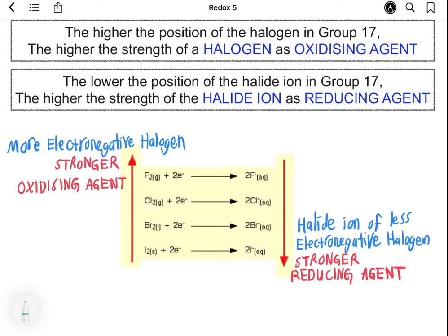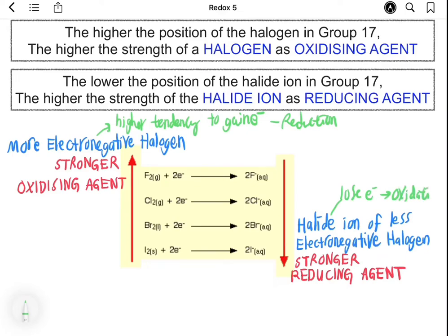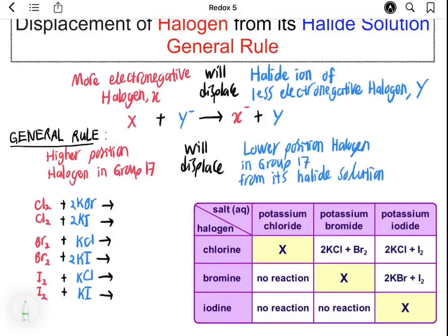The electronegativity of halogens decreases going down Group 17, because the nucleus becomes further away from the outermost occupied shell, so the ability of halogens to gain electrons and become negatively charged decreases going down the group. Halogens placed in a higher position in Group 17 are more electronegative — that is, they have a higher tendency to gain electrons, so they can be reduced easily to halide ions, and they act as strong oxidizing agents. On the other hand, halide ions of halogens placed in a lower position in Group 17 can be oxidized easily by losing electrons, and since they readily undergo oxidation, they act as strong reducing agents.